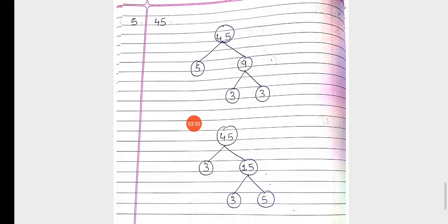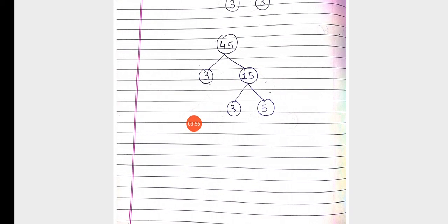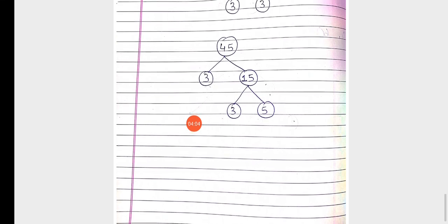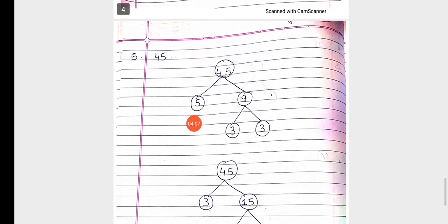Now for 45, I have to make a factor tree in two ways. In the first way, I have written 5 — 9s are 45. We cannot expand 5 further but we can expand 9. So 3 — 3s are 9. In the second way, 3 — 15s are 45. We cannot expand 3 further but we can expand 15. So 3 — 5s are 15. I hope students, you have understood how to make a factor tree.